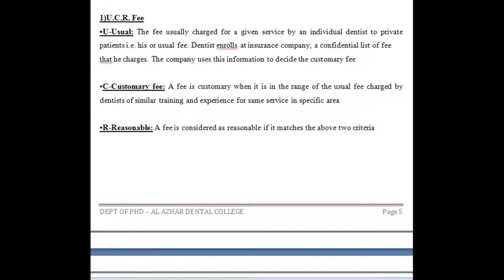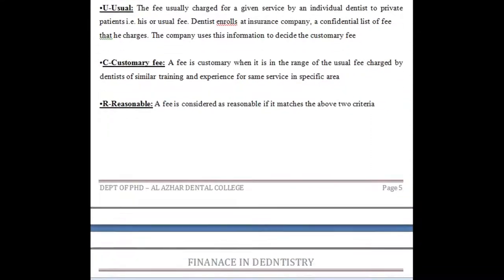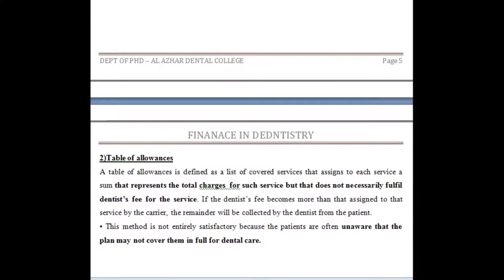The table of allowances is like a list of covered services with a particular allowance for each service. The third party gives each dentist a specific allowance per treatment. The problem is that this represents the total charge for the service but may not necessarily fulfill the dentist's fee. For example, if a dentist charges 200 dollars for oral prophylaxis but the allowance is only 150 dollars, the dentist receives only 150.